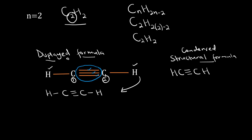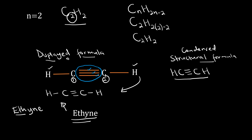So the molecular formula is C₂H₂, the displayed formula is H-C≡C-H, and the condensed structural formula also shows the triple bond explicitly. When we name this compound, we follow the prefix for n equal to two, which is 'eth-', and the name ending for all alkynes is '-yne'. That is why this compound is known as ethyne — the first alkyne compound.